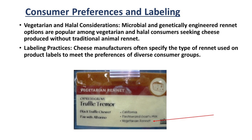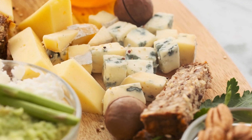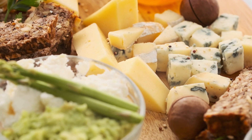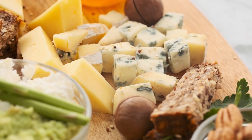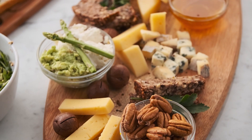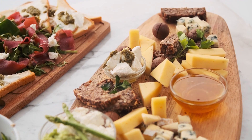Cheese manufacturers often specify the type of rennet used on product labels to meet the preferences of diverse consumer groups. Consumer demand for transparency may drive a preference for cheeses labeled with traditional or naturally derived rennet sources. Ongoing research explores novel approaches to cheesemaking, potentially reducing reliance on rennet while achieving desired textures and flavors. Rennet remains a critical component in cheese production, playing a role in coagulation and flavor development. As the industry evolves, alternative sources and production methods contribute to the sustainability and ethical considerations surrounding this essential enzyme complex. The balance between tradition, innovation, and regulatory compliance continues to shape the landscape of rennet use in the food industry.